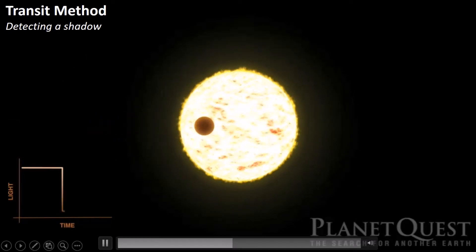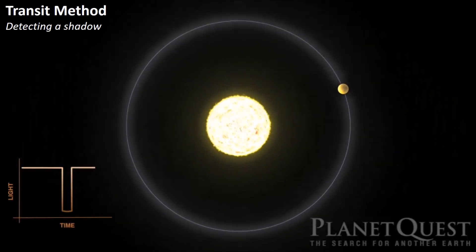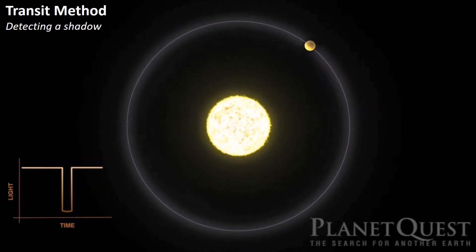Astronomers measure the amount of light that reaches their telescopes. And if they detect a drop like here, and this drop is repetitive, they may have discovered a new planet. Hooray!